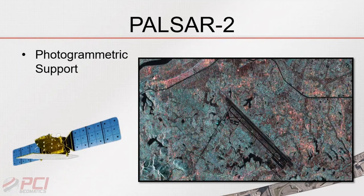The next sensor supported in Geomatica 2016 is THEOS, an earth observation satellite operated by the Thailand Space Agency. We already provided photogrammetric support in previous versions, but with 2016 we went further and now provide ATCOR support, so users can perform haze correction. Here we have a hazy scene, and using ATCOR this is what we're able to achieve with that technology.